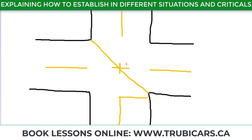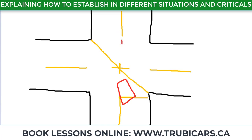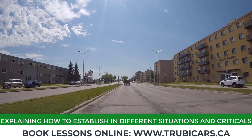Another wrong way to establish: if you have a yellow line in the middle of the street, when you establish you keep your car straight. You want to stay on your side, closer to the yellow line, but keep the car straight. If you angle your car — going sideways instead of straight — what happens is you are actually in the wrong lane, blocking oncoming traffic. The front end of your car is already on their side, and that's going to be an automatic fail.